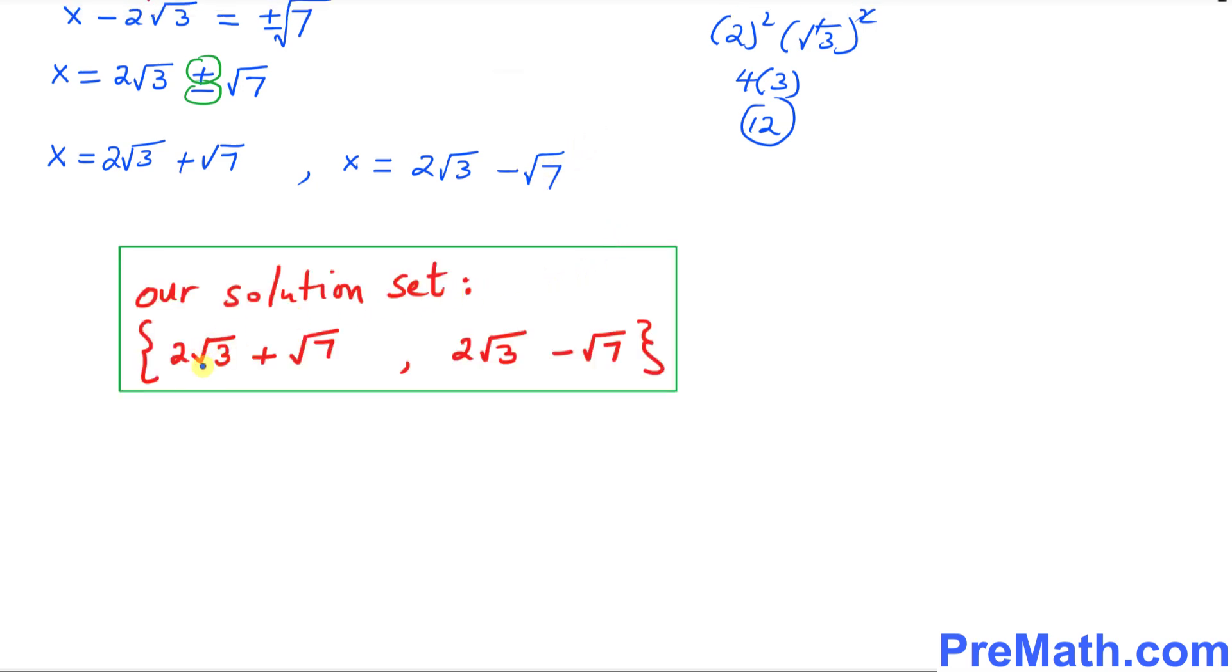Thus our solution set turns out to be 2 square root of 3 plus square root of 7, and the other solution is 2 square root of 3 minus square root of 7, and that is our answer.